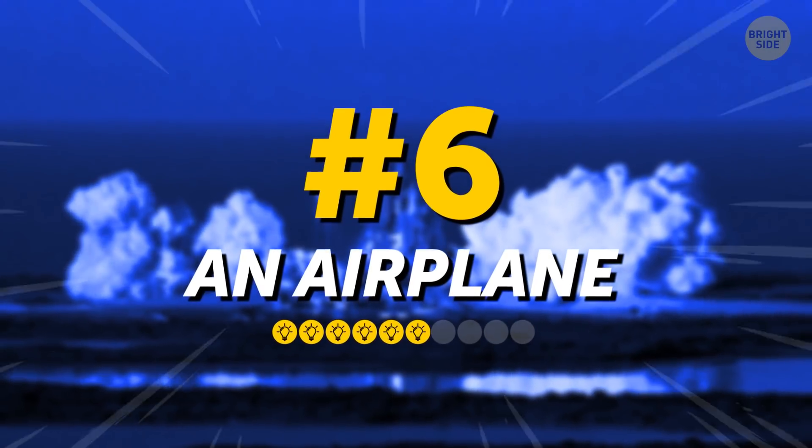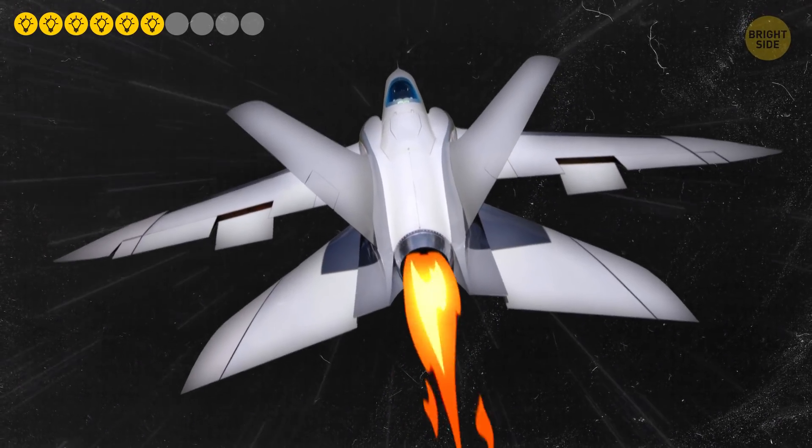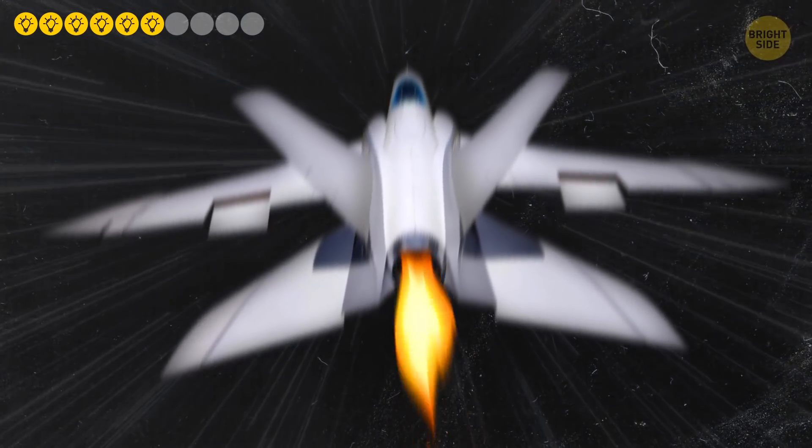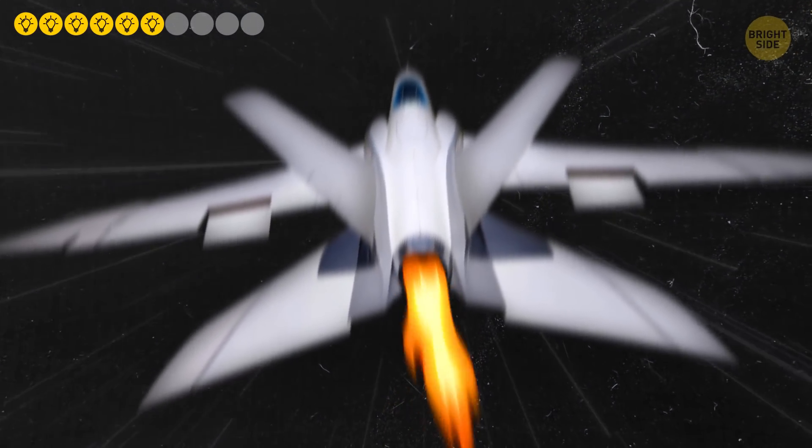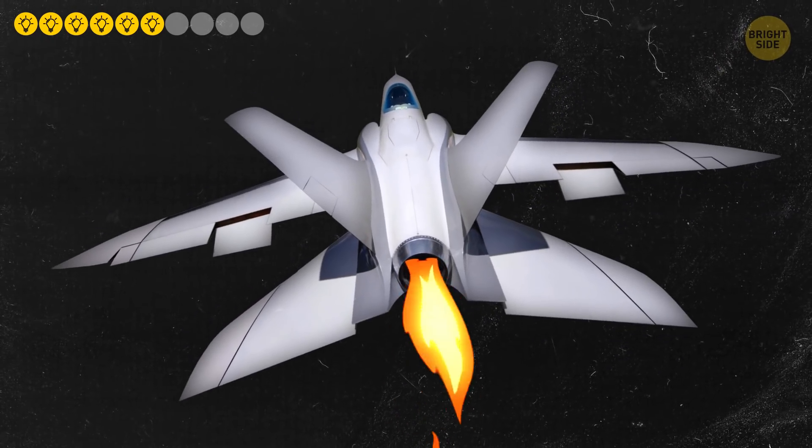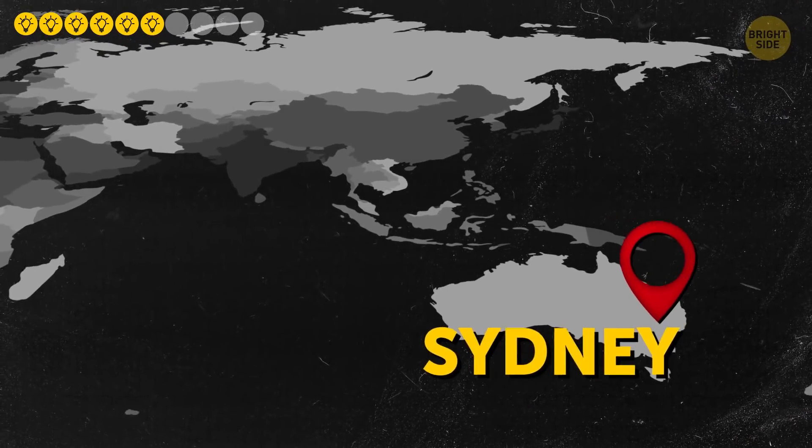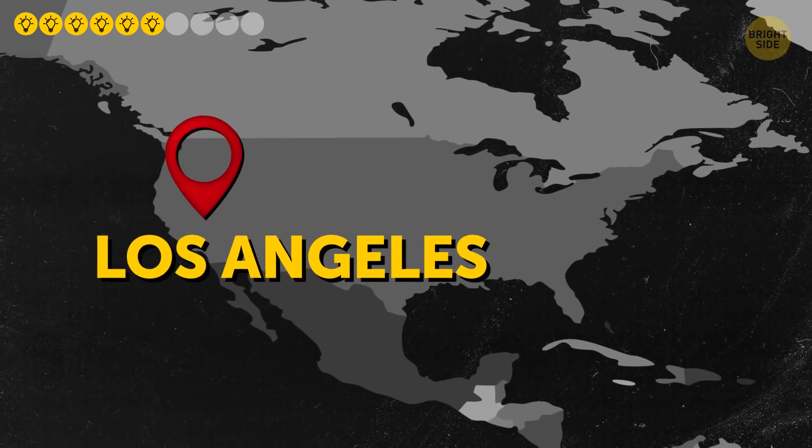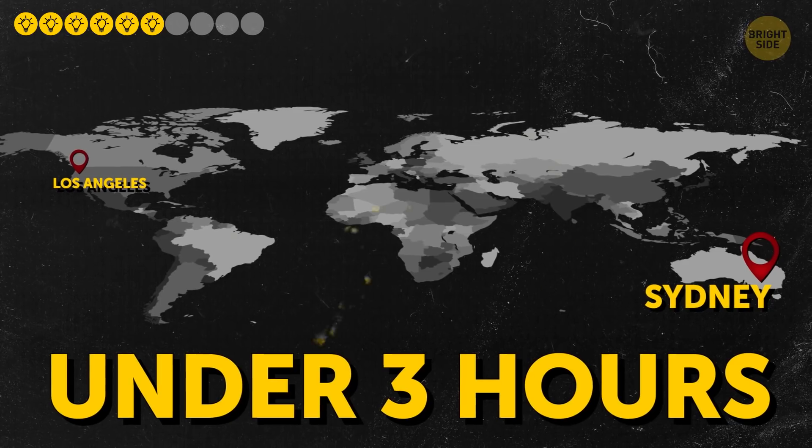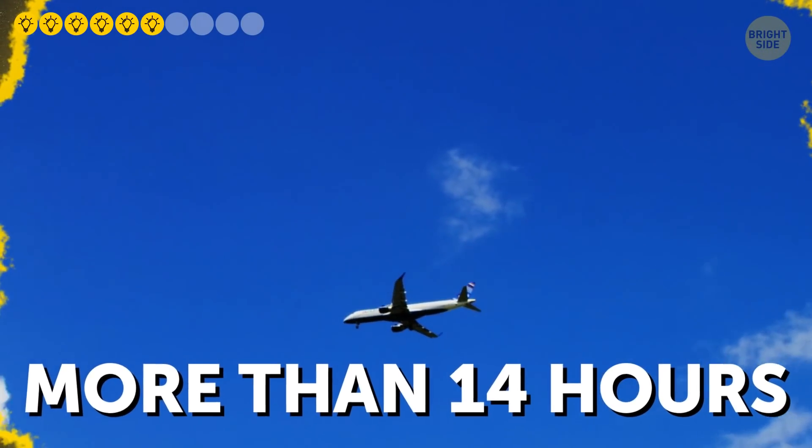An Airplane. The chances are that a hypersonic plane with a jet engine that could turn into a rocket would be able to fly into space. It would help the aircraft reach enormous speeds. And on the way back, the engine would turn into a regular jet engine once again. Such a plane would be able to cover the distance between Sydney and Los Angeles, which is about 7,600 miles, in under 3 hours. At the same time, it takes a regular airplane more than 14 hours to travel the same distance.